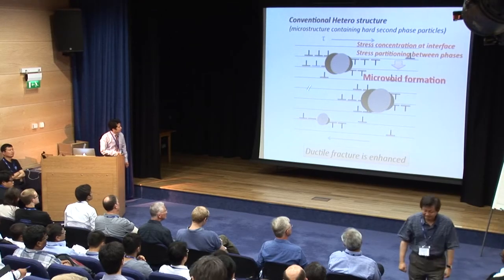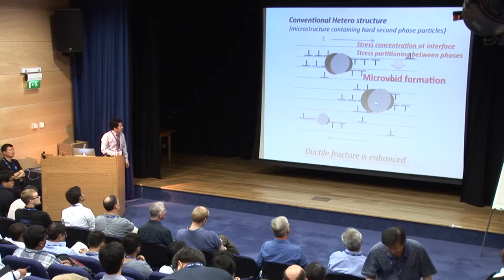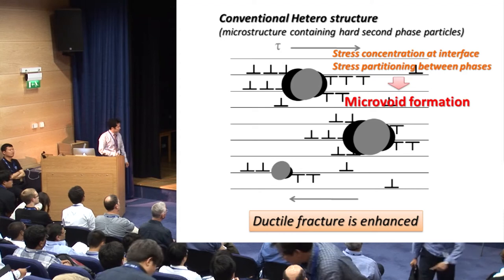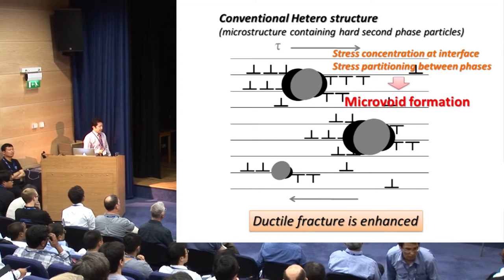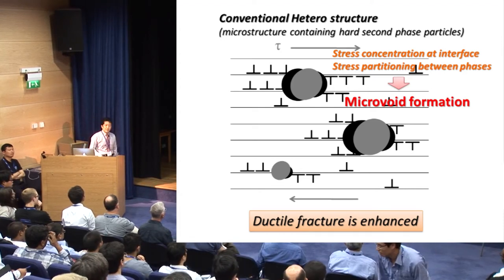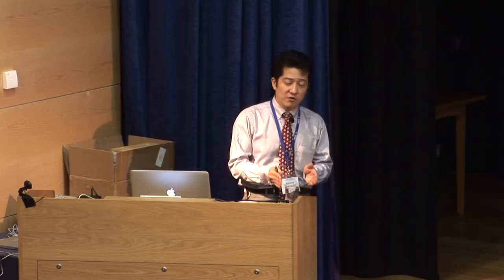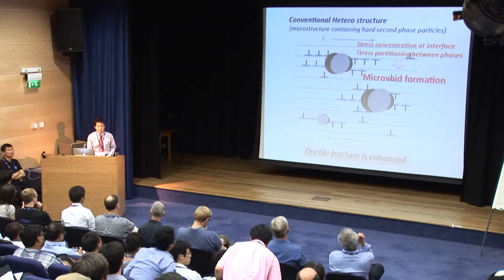However, the stress concentration causes formation of microvoids at the interface. Therefore, it is a pity that ductile fracture would be enhanced and the local elongation is reduced when we use the conventional heterostructure.